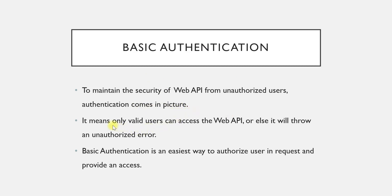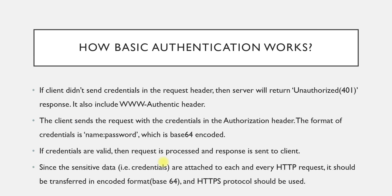Basically, only valid users can access the web API; otherwise it will throw an unauthorized error. One of the popular types of authenticating or securing your web API is basic authentication. It is an easy way to authorize a user in a request and provide access — meaning whenever you are requesting any method or endpoint of your web API, you will specify all the necessary things related to basic authentication. We are going to see all these things practically.